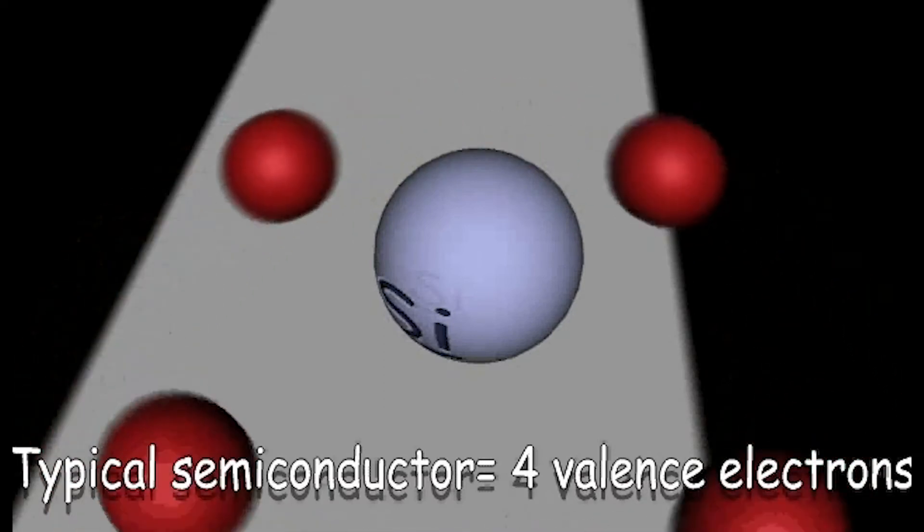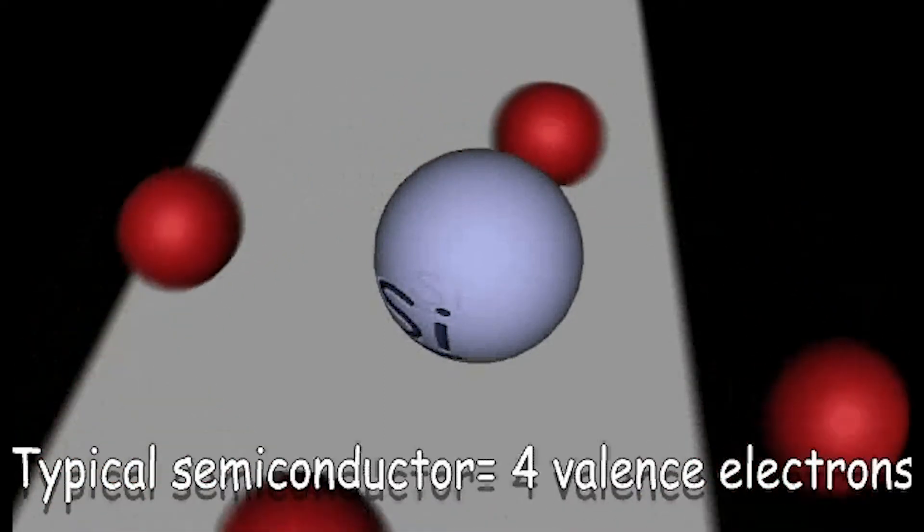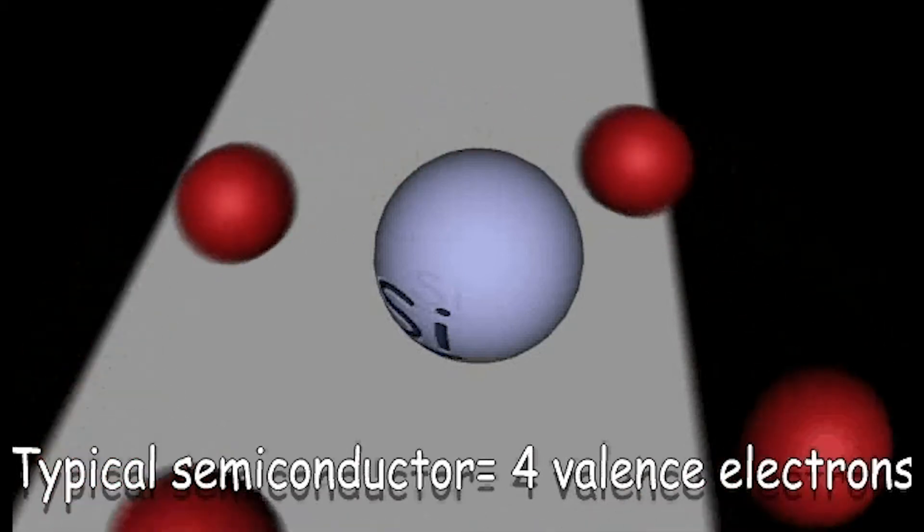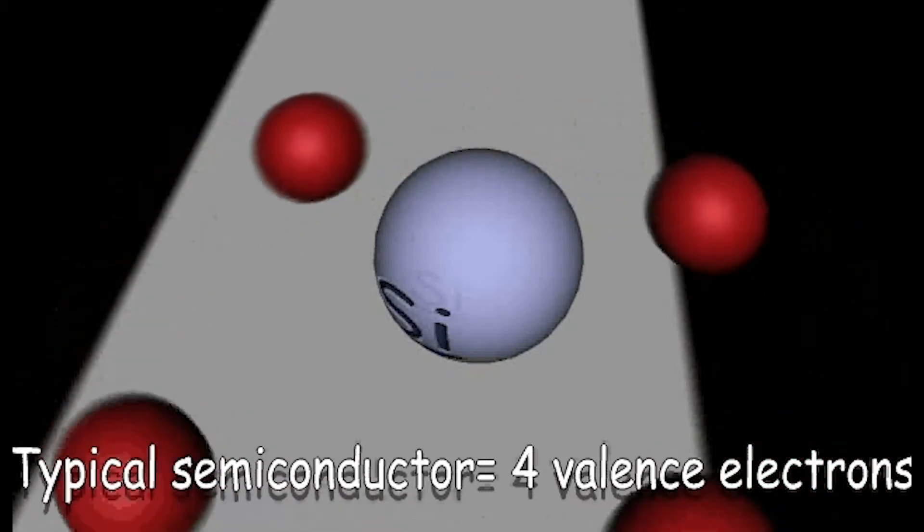The most common semiconductors are silicon or germanium, both of which are tetravalent, which means they have four valence electrons in their outermost shell.